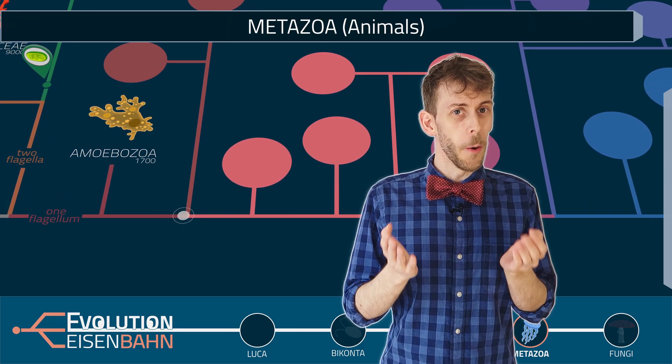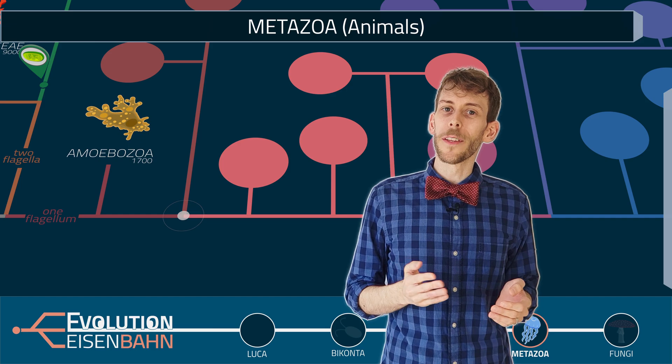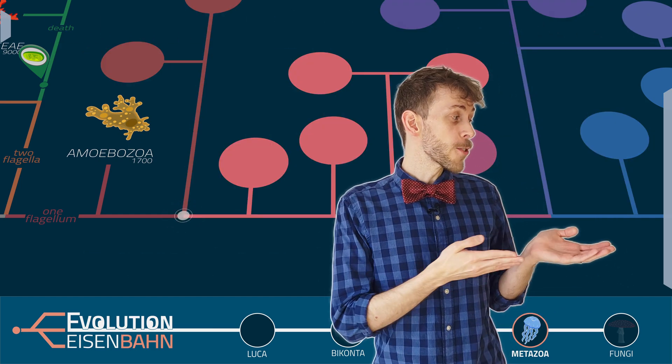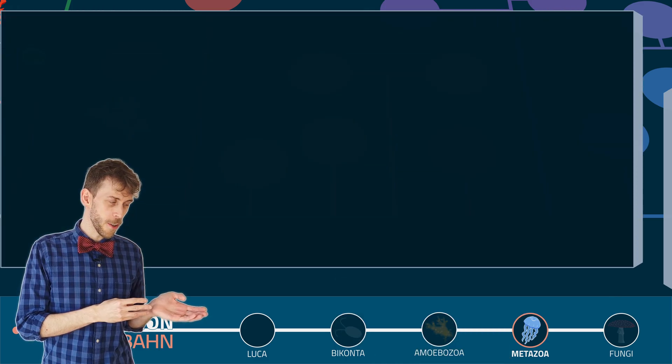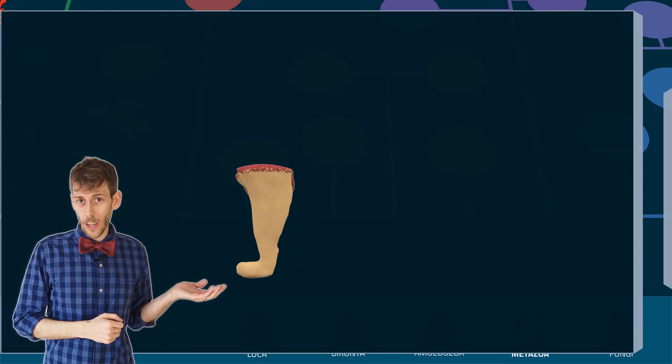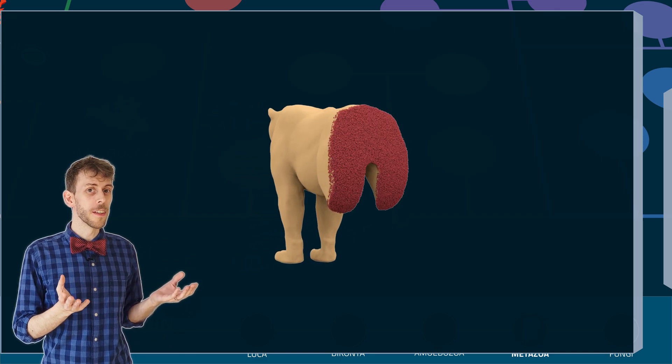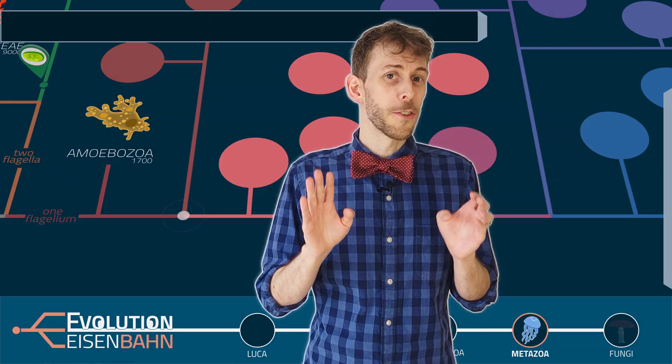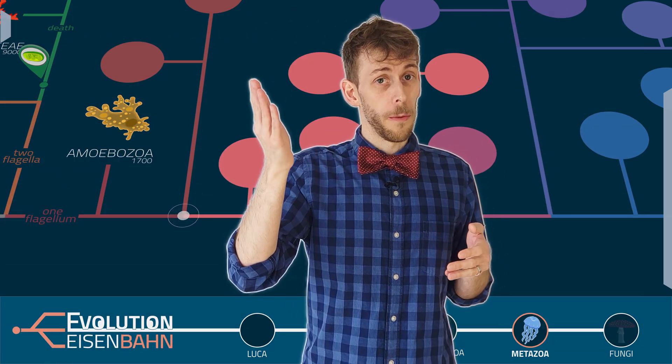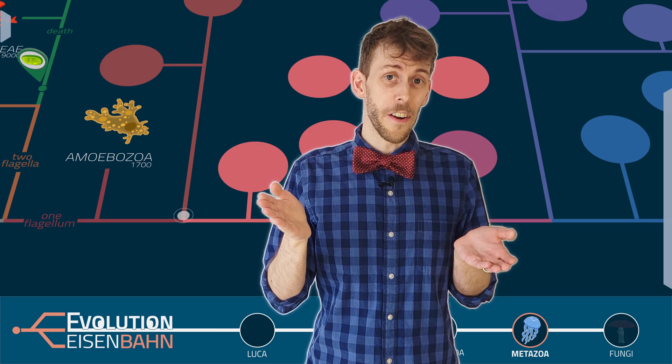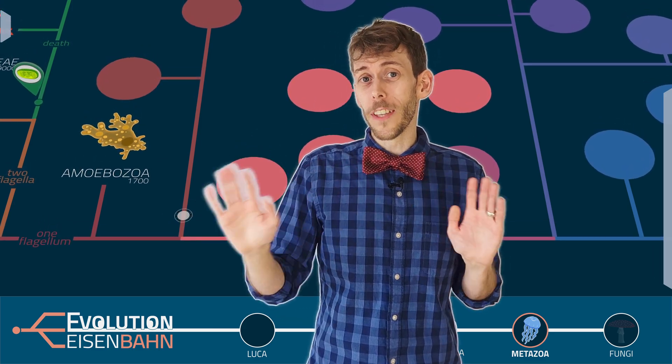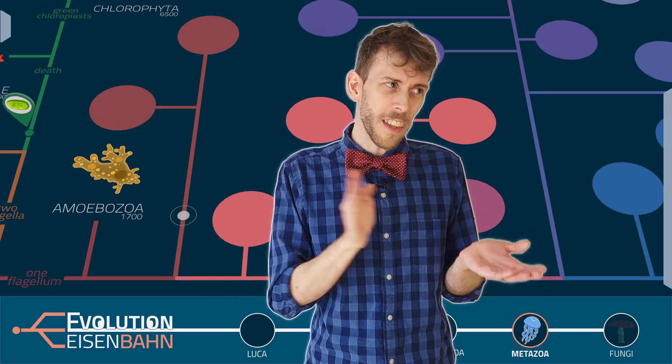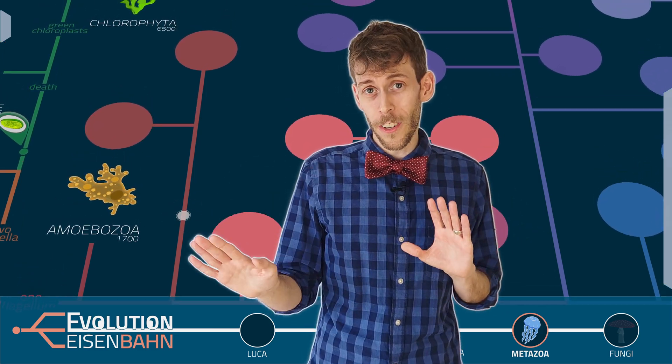And here the opistoconts split up into fungi and animals. So east of here, some opistoconts, your ancestors, have learned how to work together to form a body, a multicellular being that we call animal. But today we will continue north. The opistoconts there came up with a similar, but also very different strategy. They form multicellular beings that are not animals, but something very different and mysterious.